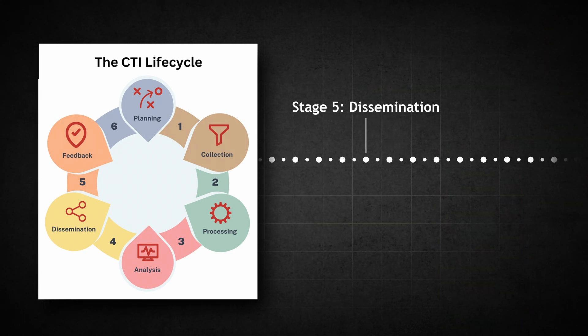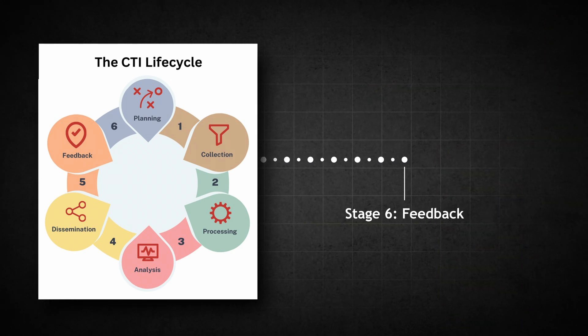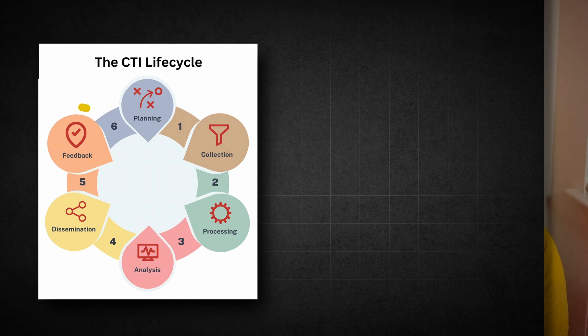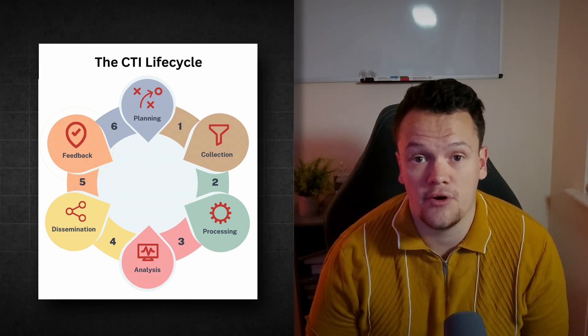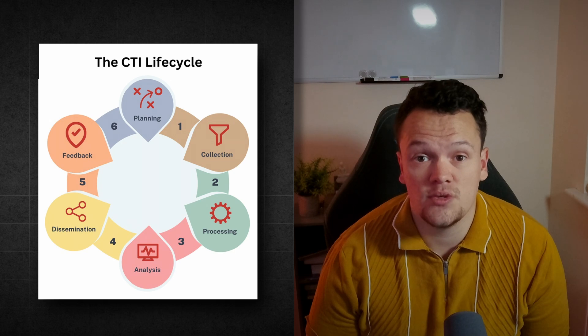Finally, but perhaps most importantly, is the feedback stage. During this stage, you will collect feedback about the intelligence you shared and the efficiency of your CTI process. This feedback is used to assess the intelligence requirements and make adjustments to align better with business objectives. Operational, tactical, and strategic intelligence all flow through this cycle. The actions performed at each stage vary depending on the intelligence — some stages are automated, while others require a human analyst.